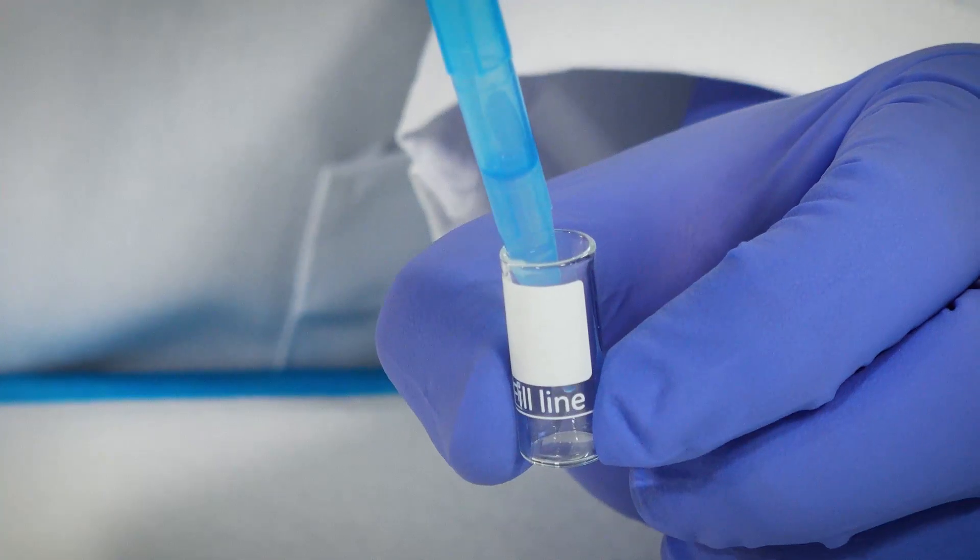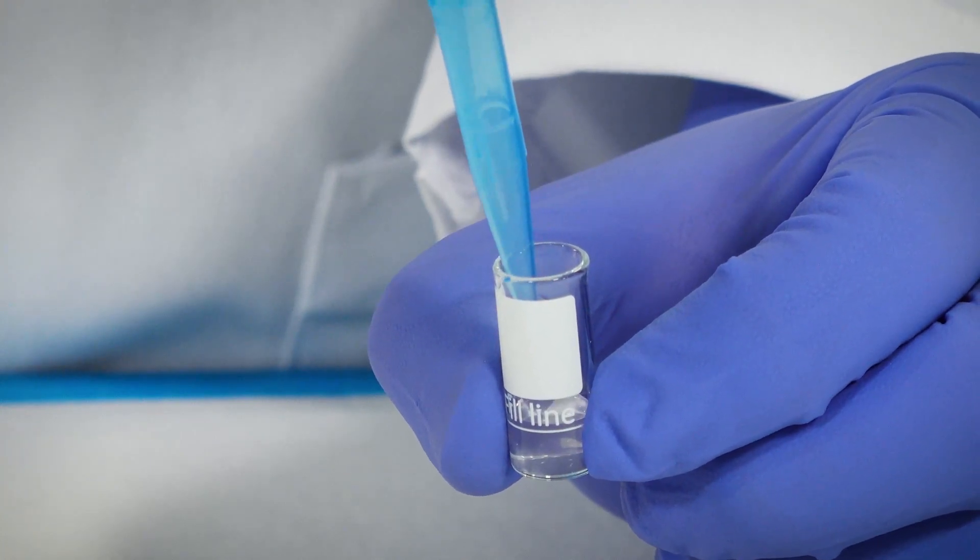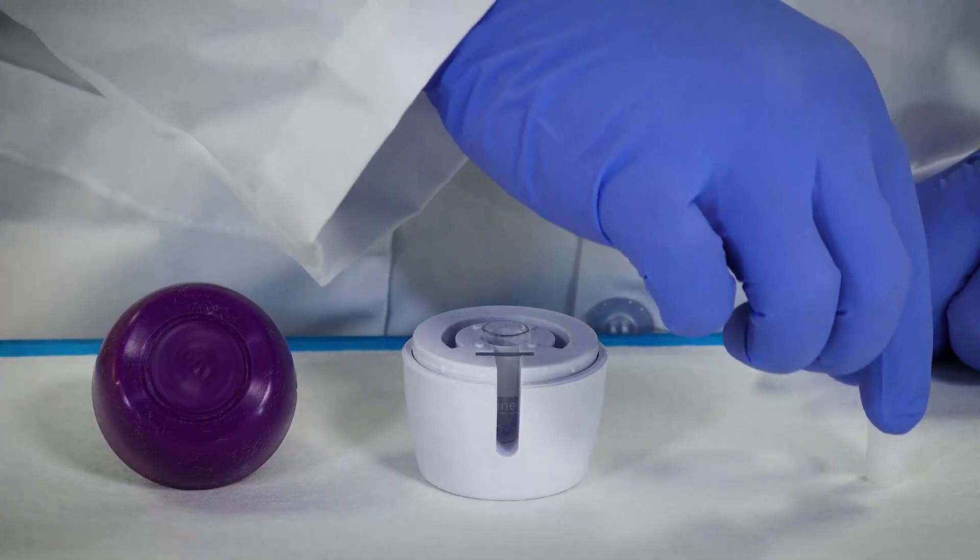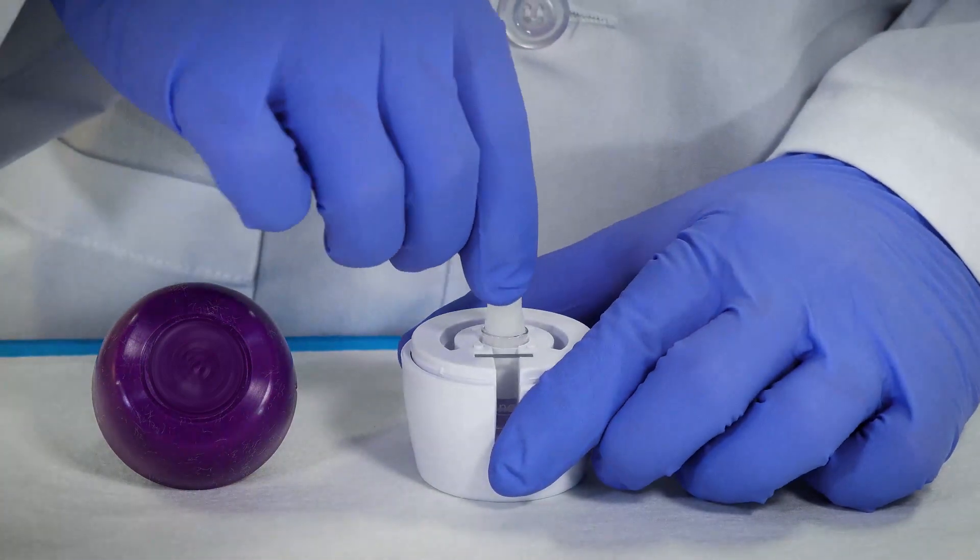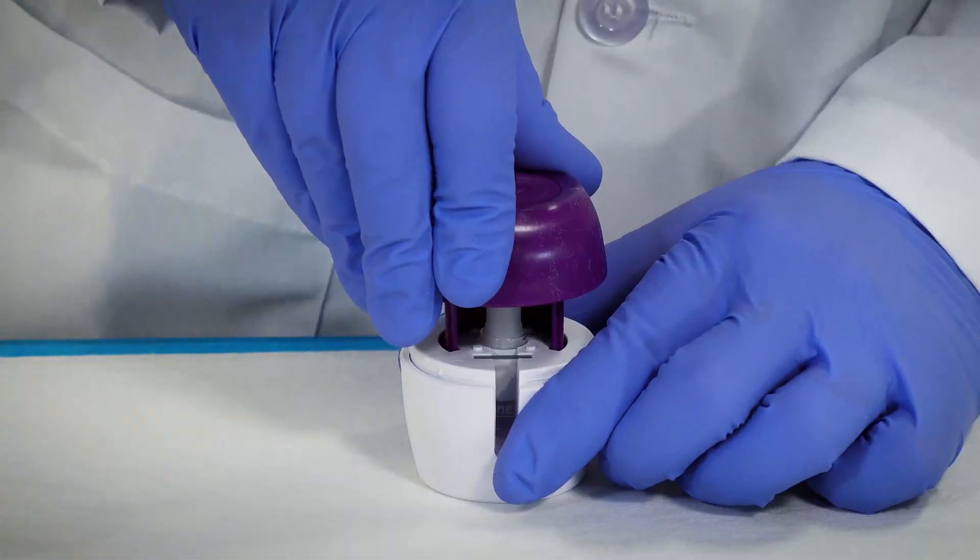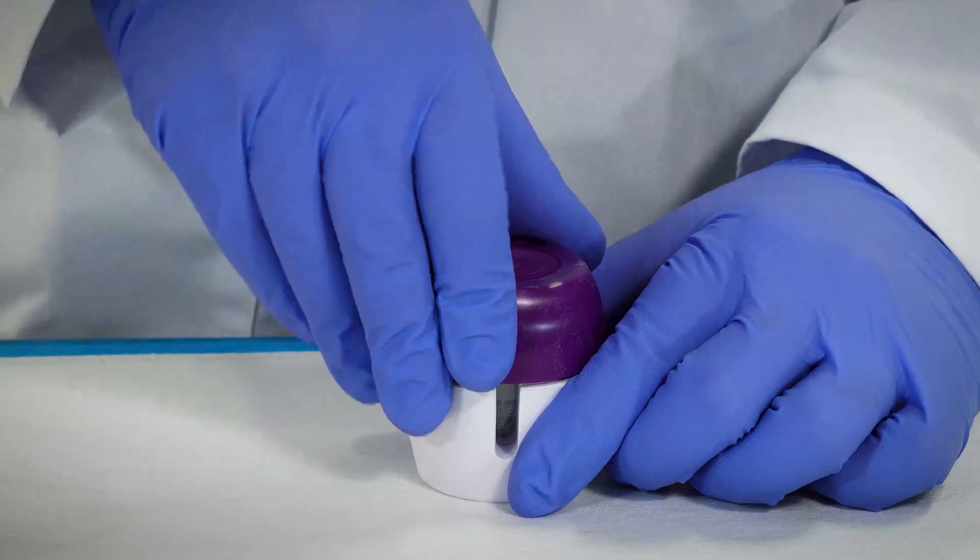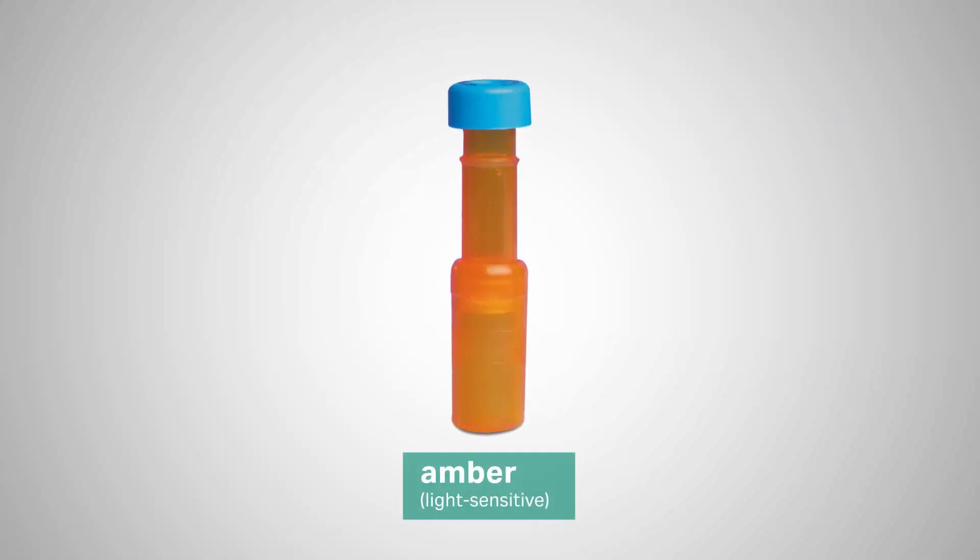To avoid plastic-based leachables, use the glass version of the Mini-Uniprep. An ergonomic compressor unit is available to speed sample prep three times faster. Use the amber version for light-sensitive samples.